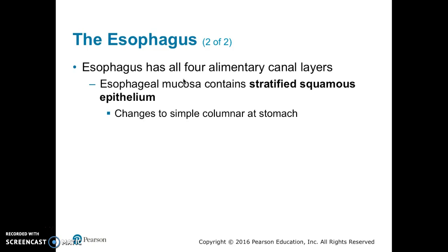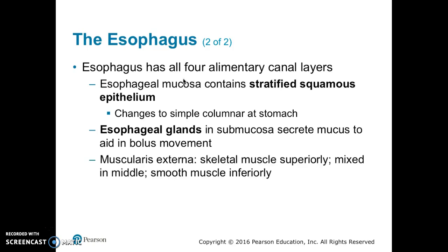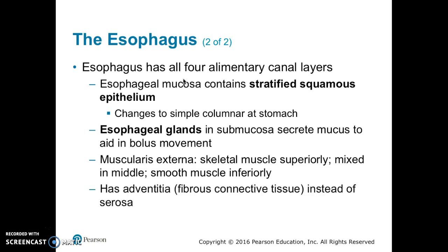The esophagus has all four alimentary canal layers. The esophageal mucosa contains stratified squamous epithelium, which changes to simple columnar at the stomach. It also has esophageal glands in the submucosa which secrete mucus to aid in bolus movement. The muscularis externa is skeletal muscle superiorly, mixed in the middle, and smooth muscle inferiorly. The esophagus also has an adventitia — fibrous connective tissue — instead of a serosa.